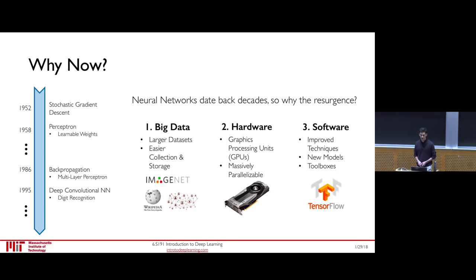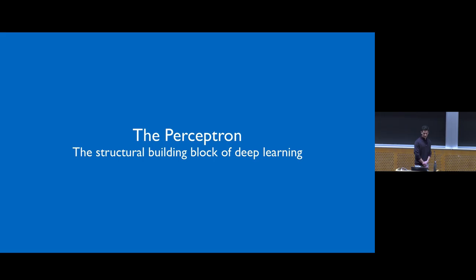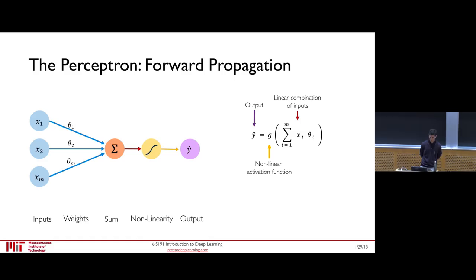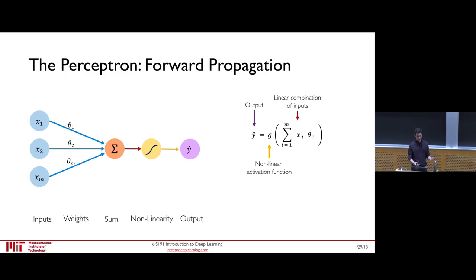Let's look at the fundamental building block of deep learning: the perceptron, which is really just a single neuron in a neural network. The idea is extremely simple. We define a set of inputs X1 through Xm, multiply each by their corresponding weight theta 1 through theta m, take this weighted combination and sum them up, then pass them through a nonlinear activation function to produce our output Y. We have M inputs and one output number.